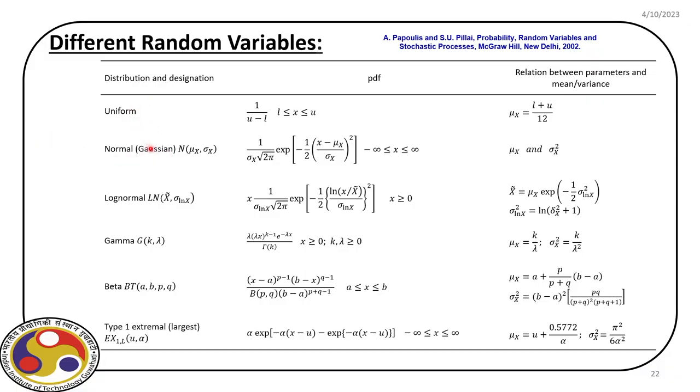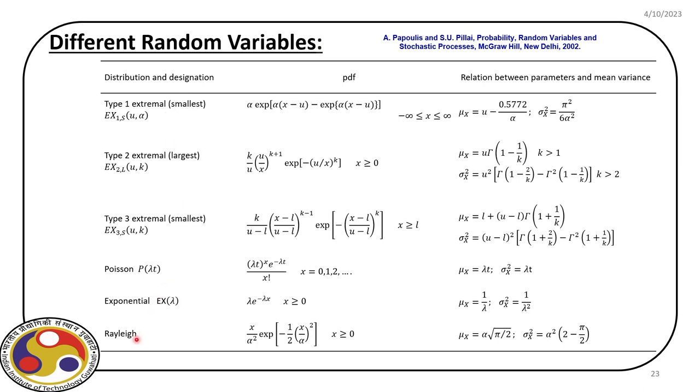These are examples of probability distributions frequently used in reliability-based design. Each distribution has parameters related to sample mean and sample standard deviation. This list is not exhaustive, but gives a good idea of relevant distributions. We conclude here and will continue in the next class, modeling one-dimensional random variables and finding probabilities associated with limit state functions. Thank you.